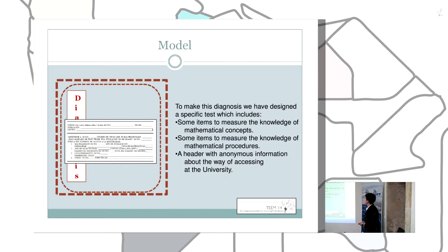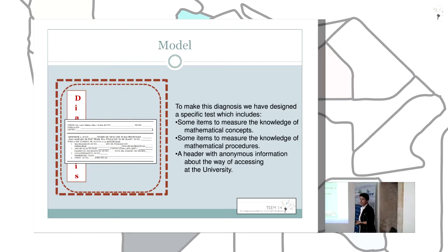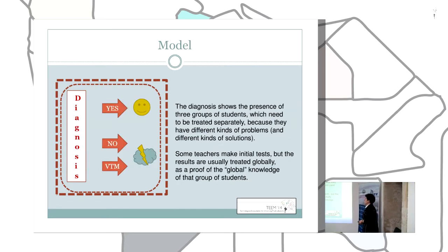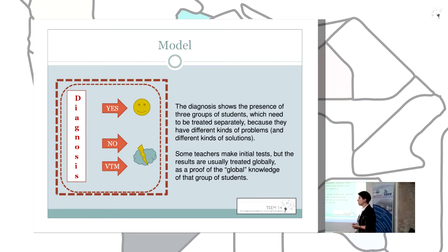To make the diagnosis, we designed a specific test. This test includes a header where we can collect data about access route — high school, vocational training modules, whether the student took the mathematics examination, and so on. So the test includes not only items to measure mathematical concepts or processes, but also this information about the way of university access. This allows us to detect the presence of three groups of students who should be treated separately, which is a key difference from other studies where results are typically treated globally.